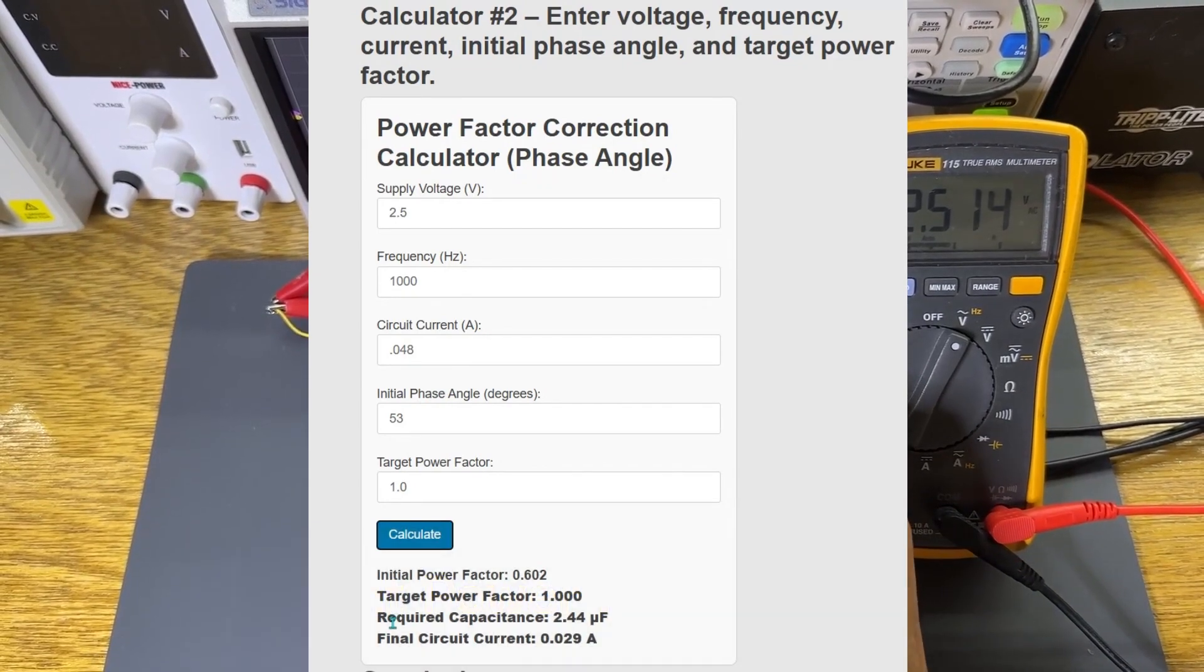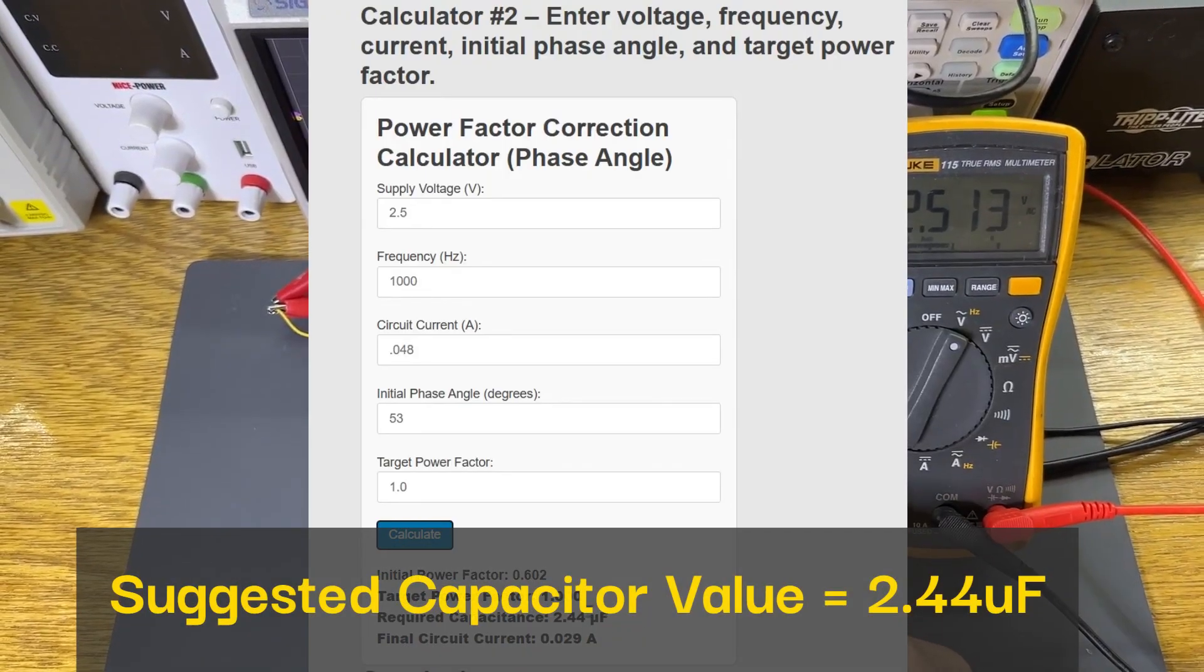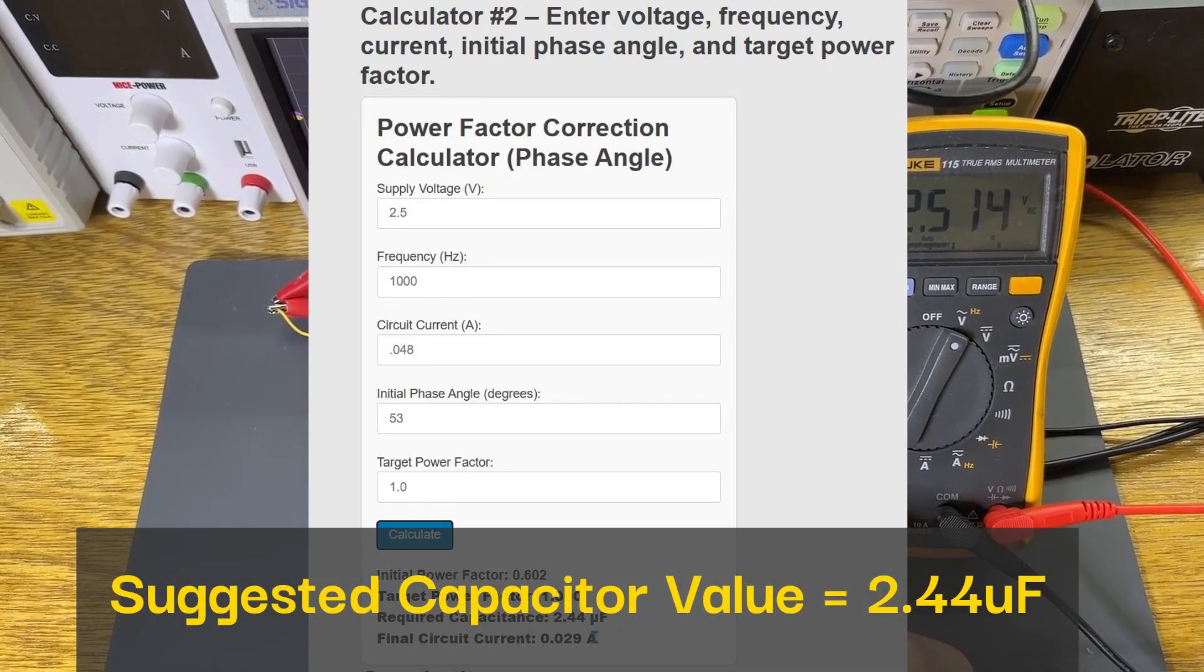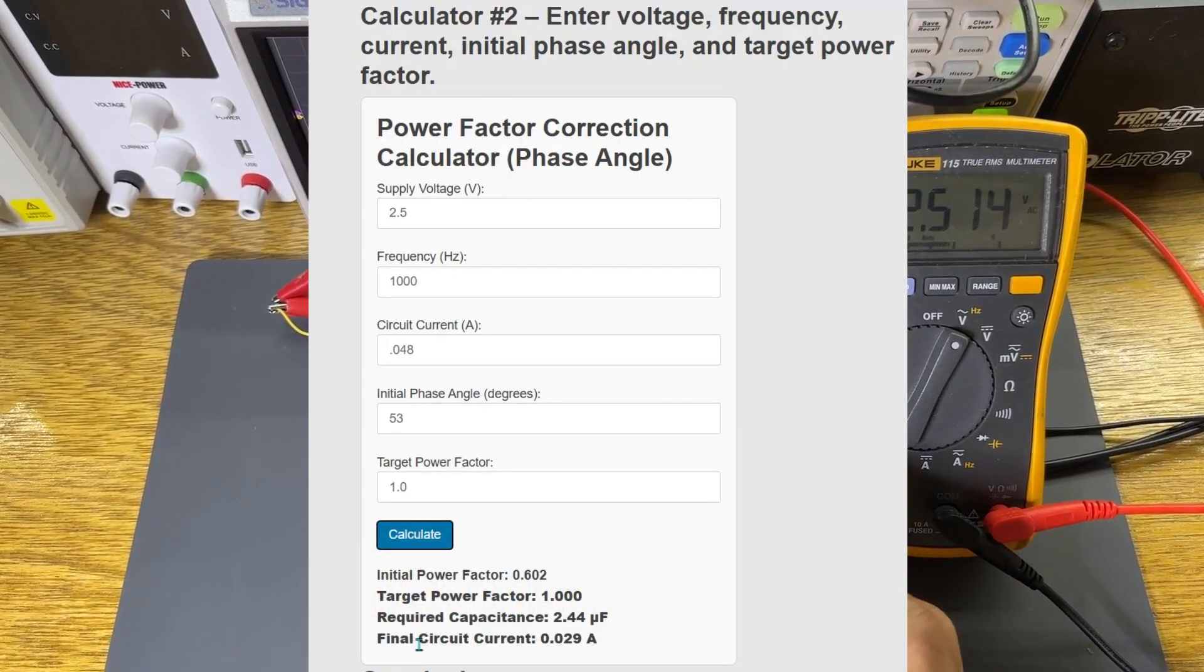It also suggests that based on the underlying calculations, that we use a capacitor value of 2.44 microfarads to correct this inefficiency. Now let's slow down and show the process behind that 2.44 microfarad calculation.